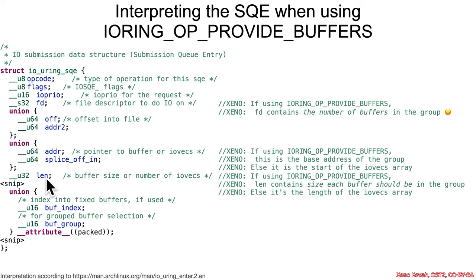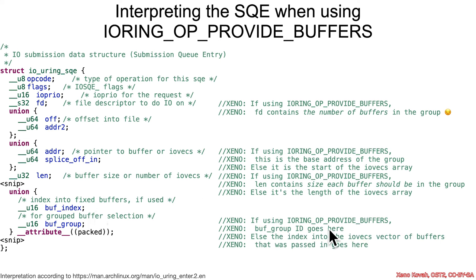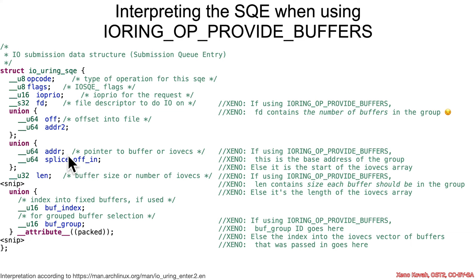The length field also has different interpretations: when using this option it is the size of each smaller buffer in the buffer group, whereas in normal usage it is the length of the IO vectors array overall. The union field buff_group holds the buffer group ID when using this option, whereas normally it would indicate which fixed buffer index to use. You'll encounter usages of addr, buff_index, and buff_group, so you may need to refer back to these clarifications for the specific case pertinent to this vulnerability.